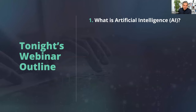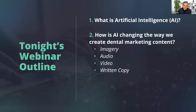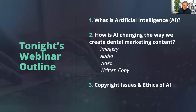Tonight's outline: first, we'll hit the basic 101 question — what is artificial intelligence? Then we'll talk about how AI is changing the way we create dental marketing content from imagery, audio, video, and written copy. ChatGPT is mainly that written copy. We'll also address copyright issues and ethics of AI, and then at the very end we'll have Q&A.